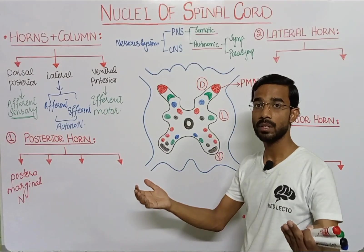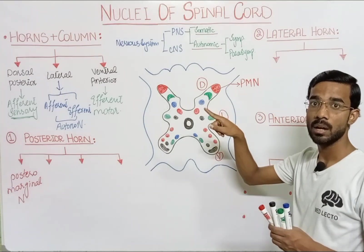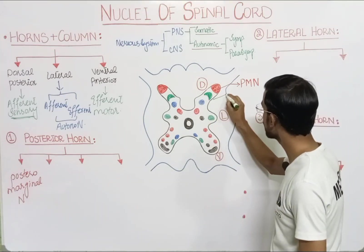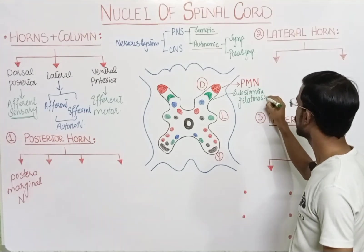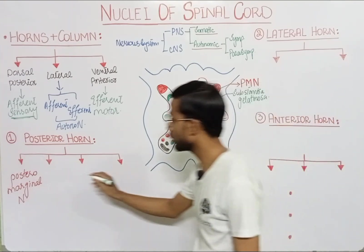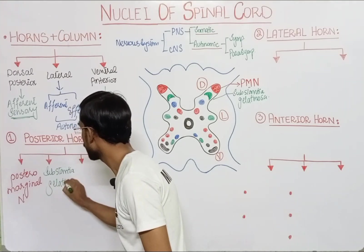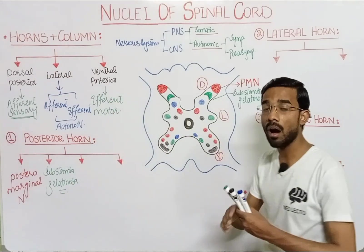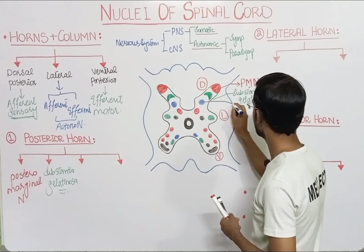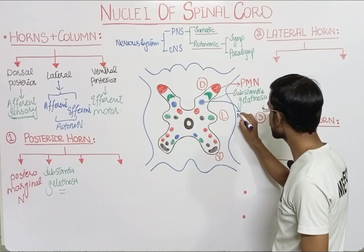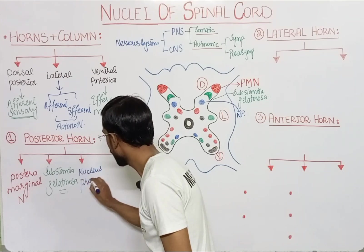The posterior marginal nucleus actually receives sensory information. The next nucleus present in the dorsal or posterior horn is the substantia gelatinosa. The third nucleus is called the nucleus proprius, which is also present all over the spinal cord.